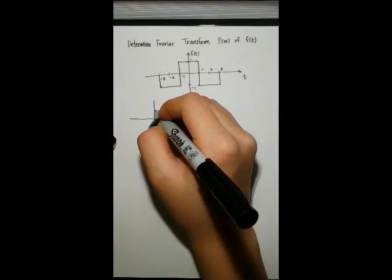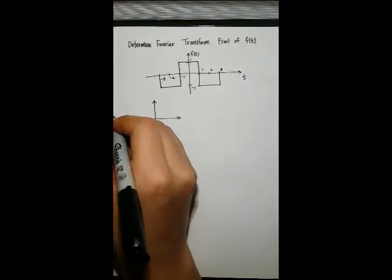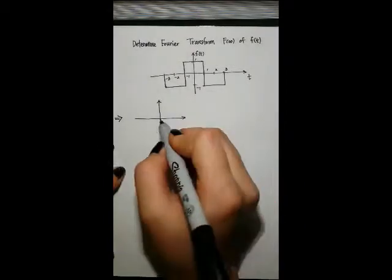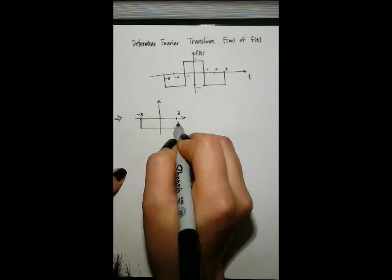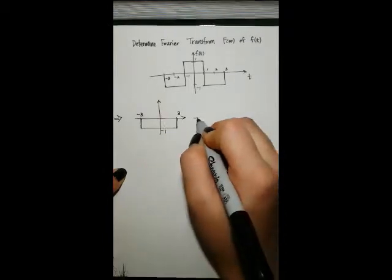Given f of t, we need to determine the Fourier transform f of omega. Now looking at this function, we realize that it can be decomposed into the sum of two rectangular functions.